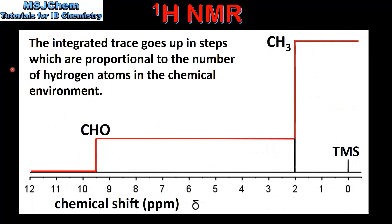And finally we look at an integrated trace. In this spectrum the integrated trace is shown in red. The integrated trace goes up in steps which are proportional to the number of hydrogen atoms in the chemical environment. The CHO group has one hydrogen atom and the CH3 group has three hydrogen atoms. Therefore this step should be three times higher than this step.